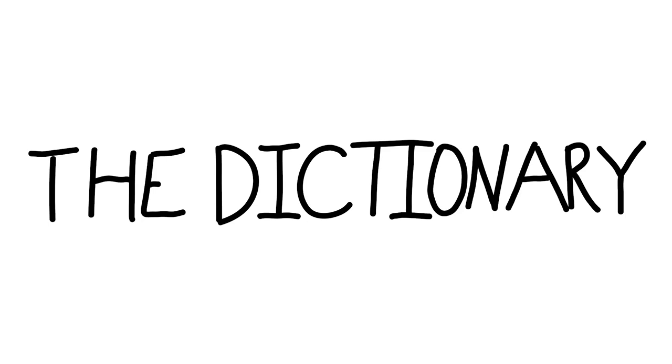Now we're going to read some synonym information for the word base — this is the third form of base. Base, low, vile, mean — deserving of contempt because of the absence of higher values. Base stresses the ignoble and may suggest cruelty, treachery, greed, or grossness, as in 'base motives.' Low may connote crafty cunning, vulgarity, or immorality, and regularly implies an outraging of one's sense of decency or propriety, as in 'refused to listen to such low talk.' Vile, the strongest of these words, tends to suggest disgusting depravity or filth, as in 'a vile remark.'